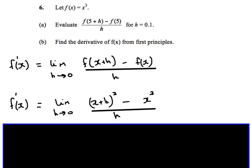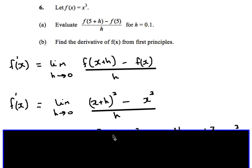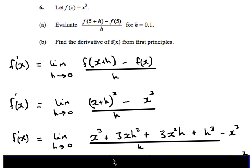We replace f of x with f of x plus h. So this becomes x plus h cubed, take away x cubed, all over h. The idea is to see what happens when h becomes closer and closer to 0. First things first, we can expand out the brackets, and we end up with this function here.